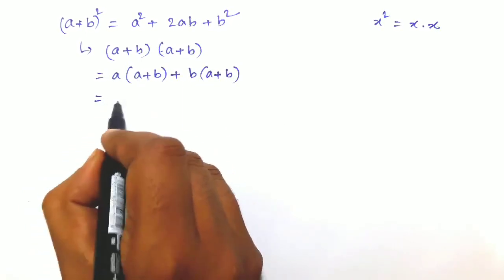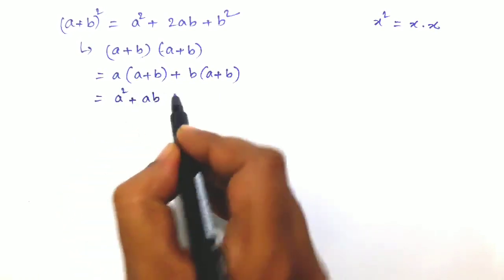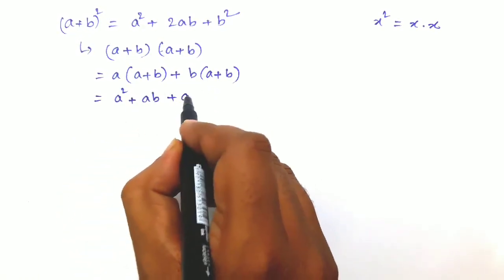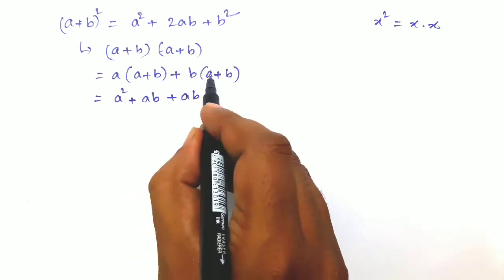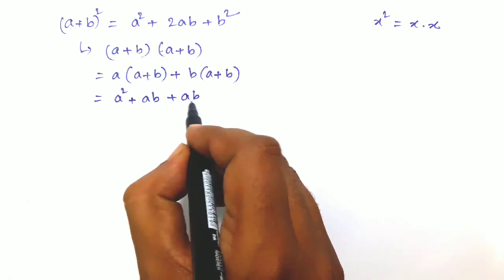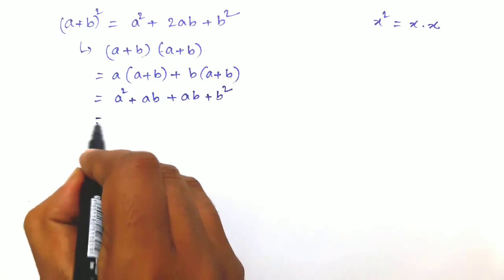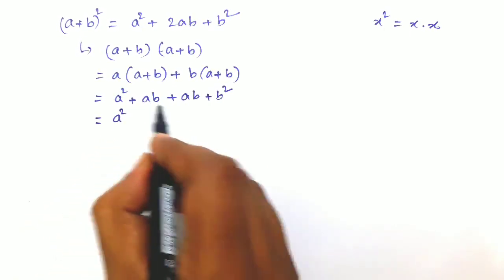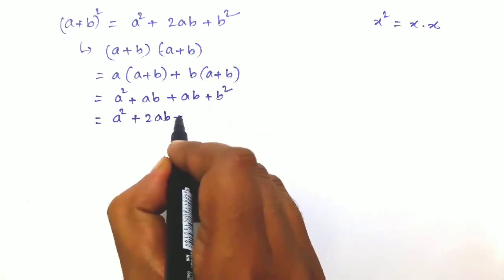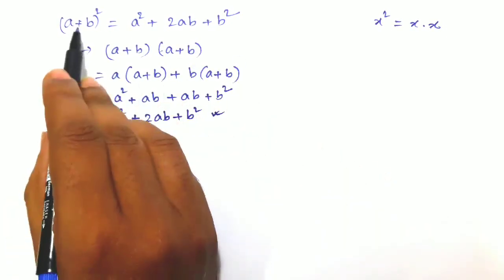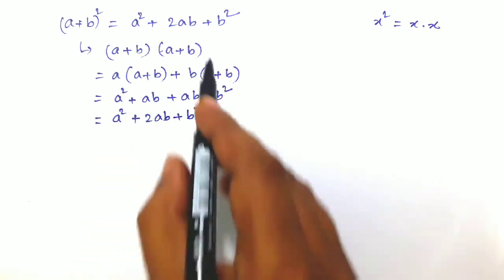Multiplying out: a × a = a², a × b = ab, b × a = ab (using the commutative property, b × a = a × b), and b × b = b². So ab + ab = 2ab, giving us a² + 2ab + b². Hence the formula: (a + b)² = a² + 2ab + b².